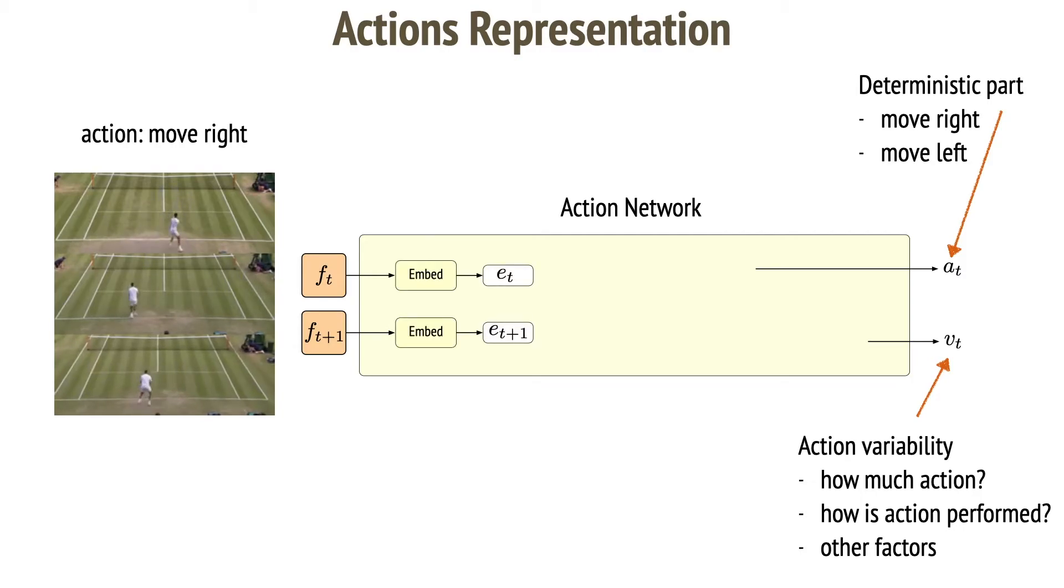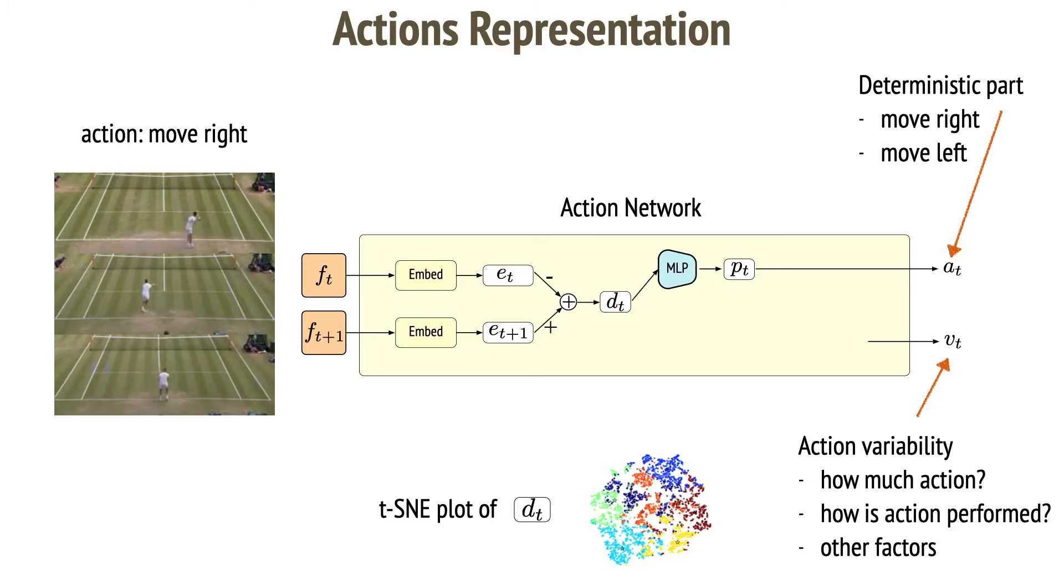We embed image features again to get action embeddings. We then subtract the embeddings to obtain the difference vector DT. A fully connected network then uses DT to predict one hot action label. If we visualize the space of DT and use different colors to present each action class, as recognized by the fully connected network, we will see that the same actions are located close to each other in this space.